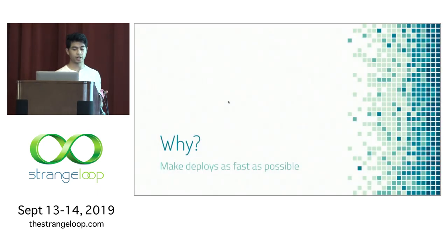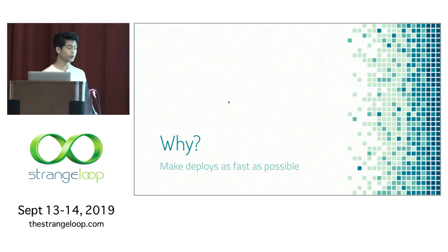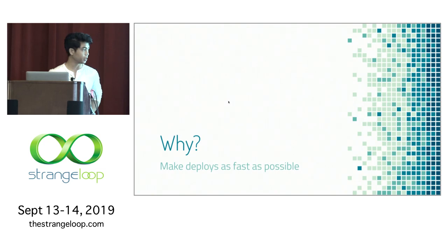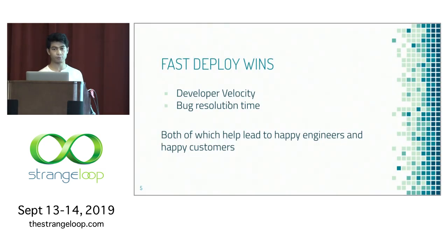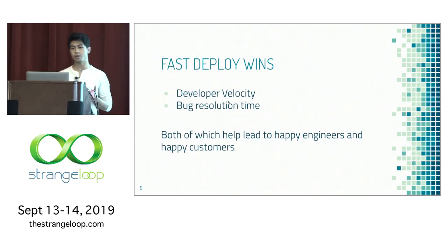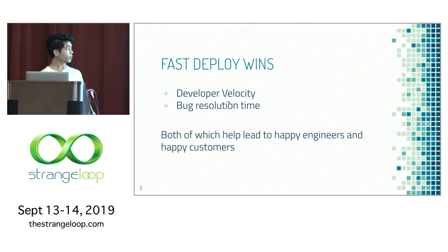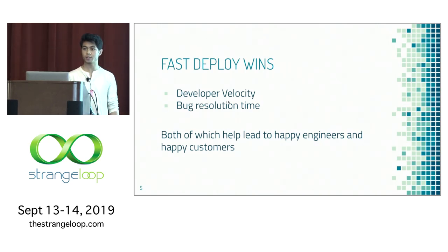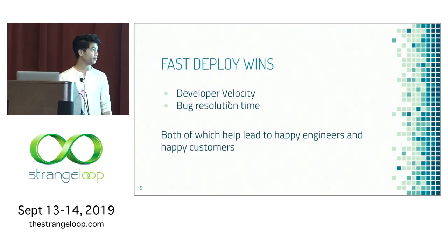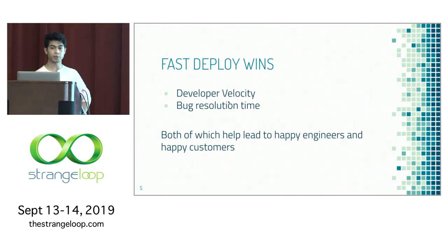Let's talk about why this is even valuable. What we wanted to do was make deploys as fast as possible at Samsara. There are wins around developer velocity, being able to iterate on features as quickly as possible. There are also changes that need to wait for other changes to deploy first, and there's bug resolution time for customers — it would be great to get fixes out as quickly as possible. Both of these lead to happy engineers and happy customers.